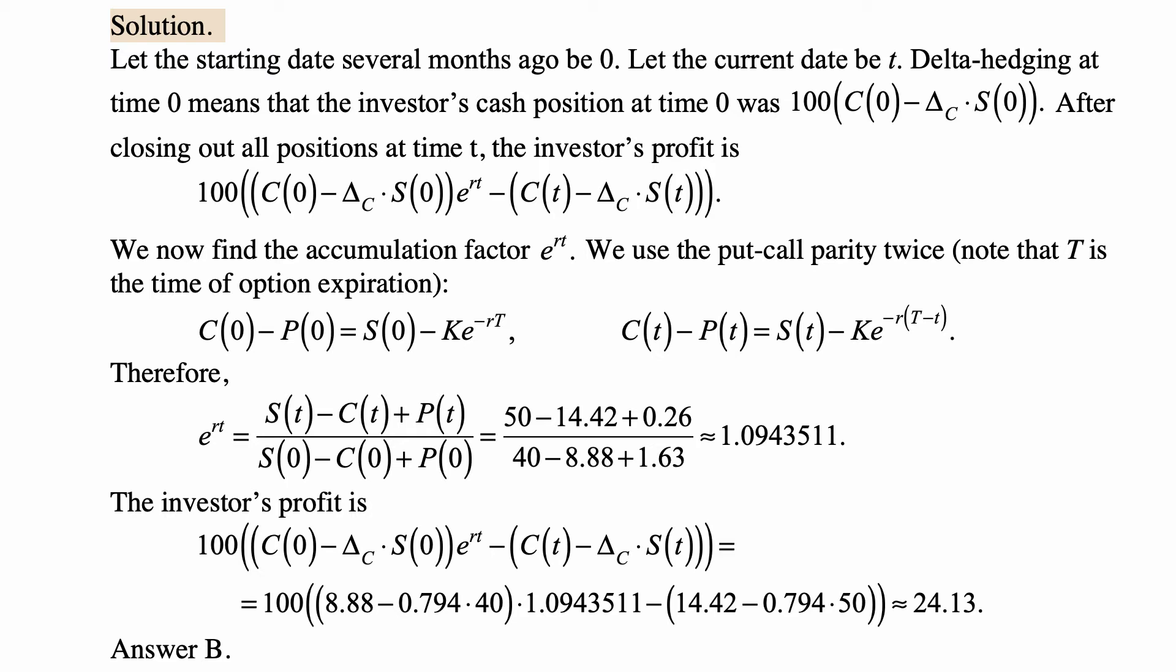C(0) is the value of the call, and delta_C times the price of the stock. Delta_C is the number of shares of stock that will be used for the hedging.